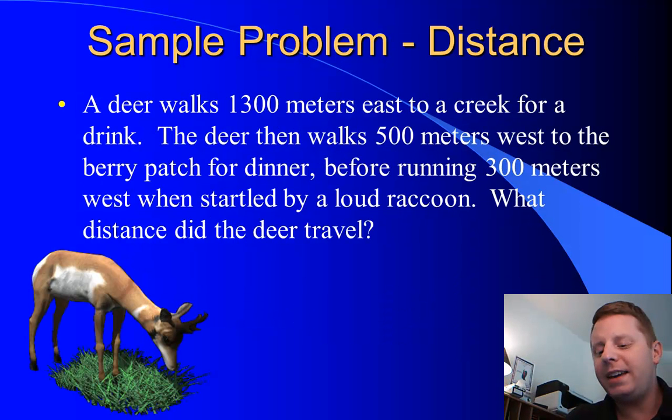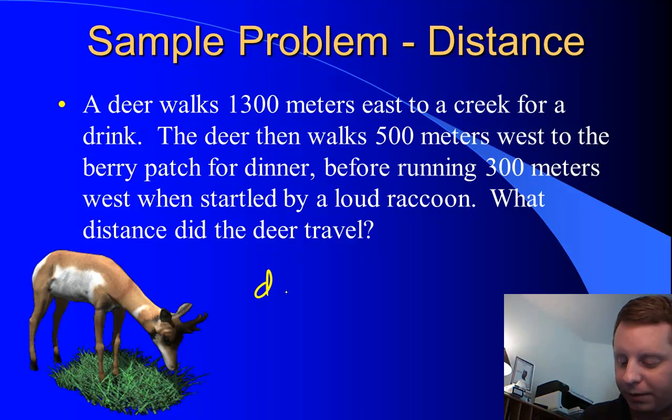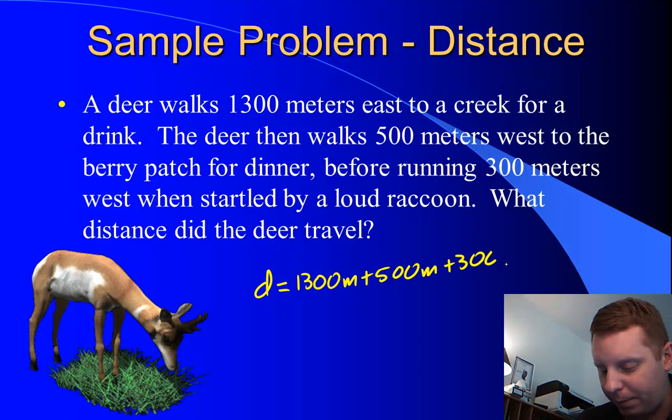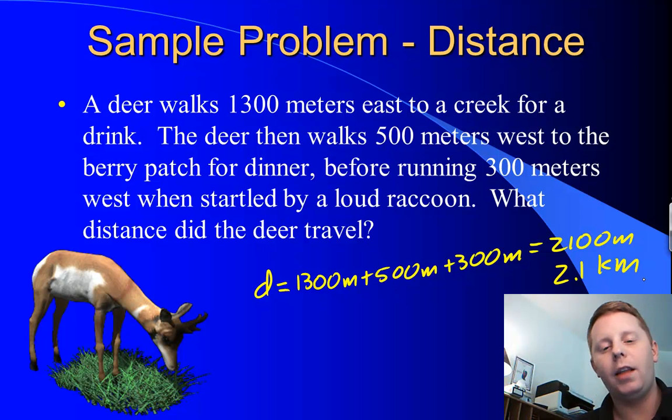If we take a sample problem, a deer walks 1300 meters east to a creek for a drink. The deer then walks 500 meters west to a berry patch for dinner before running 300 meters west when startled by a loud raccoon. What distance did the deer travel? Well, its total distance D must be 1300 meters east, then it walked 500 meters west, and then it ran 300 meters west for a total of 2100 meters or 2.1 kilometers.